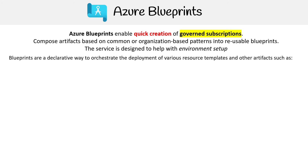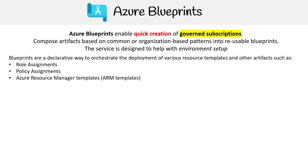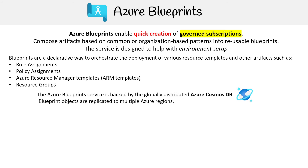Artifacts could be role assignments, policy assignments, Azure Resource Manager templates (also known as ARM templates), and resource groups. The Azure Blueprint service is backed by the globally distributed Azure Cosmos DB, and blueprint objects are replicated to multiple regions, so they're definitely well backed up.